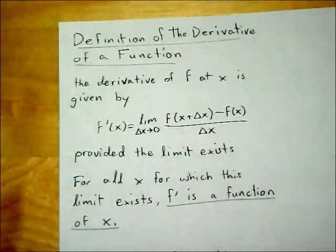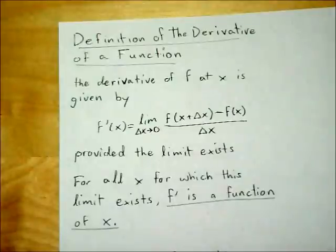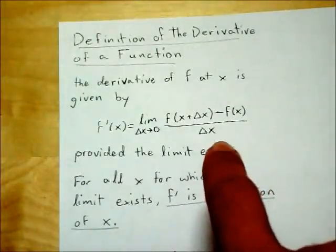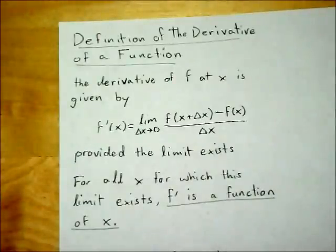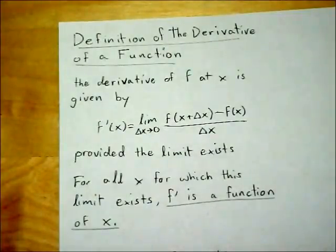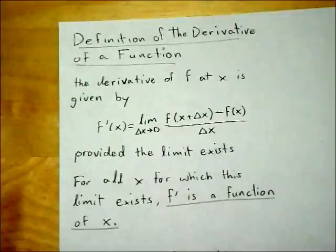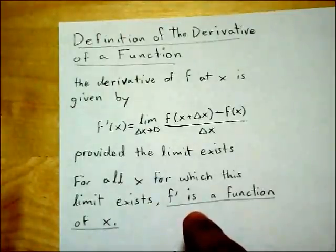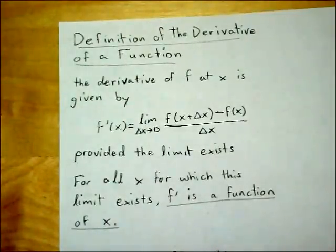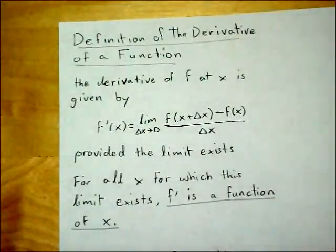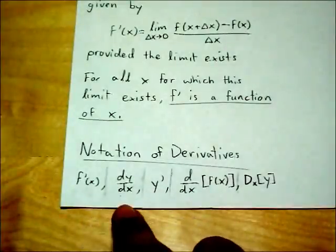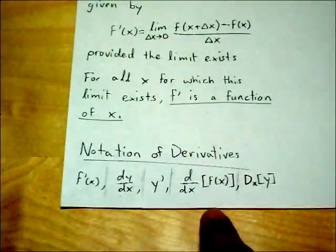Now that we know how to find the tangent line of a function, we move on to a crucial point in calculus: the derivative of a function. The derivative of a function is determined with the following formula. As you can see, it is almost identical to the slope formula from before. The crucial difference is that the derivative formula deals with a variable instead of a constant c. This means the derivative of a function can yield another function instead of a constant. In other words, for all x in which this limit exists, f prime is a function of x. Derivatives can be denoted by various notations, such as f prime of x, dy/dx, y prime, or d/dx of f of x.